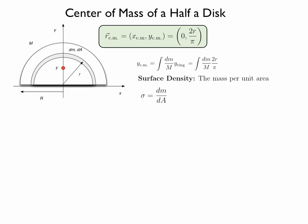We write the mass per unit area sigma equal to dm over dA, and we can write for the mass of the ring dm equal to sigma dA. The question now is what is the area of such a ring?